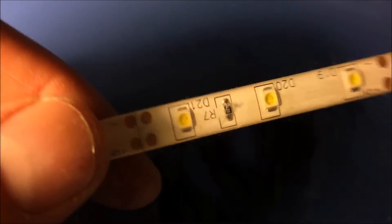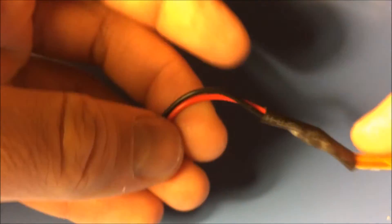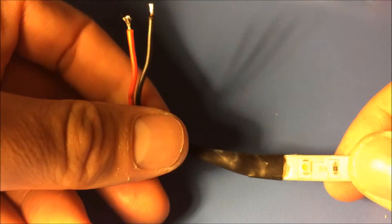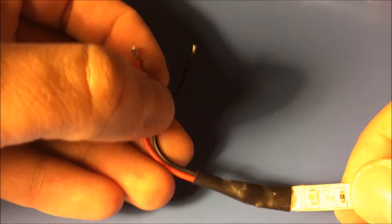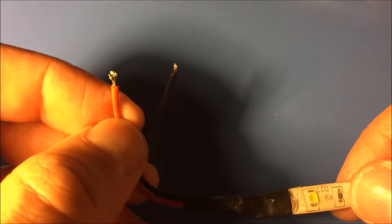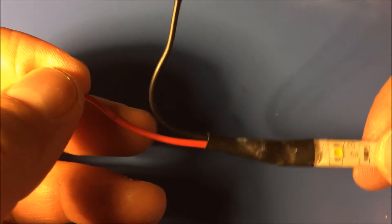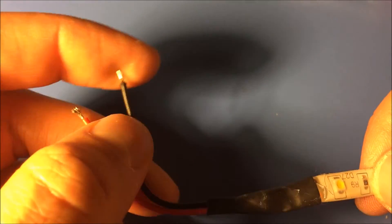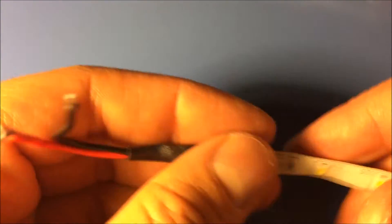If you buy them from the store, the ends will come like this from the factory. You just connect your LED driver here. The positive side always goes to the red wire and the negative side goes to the black. But if you cut it away...